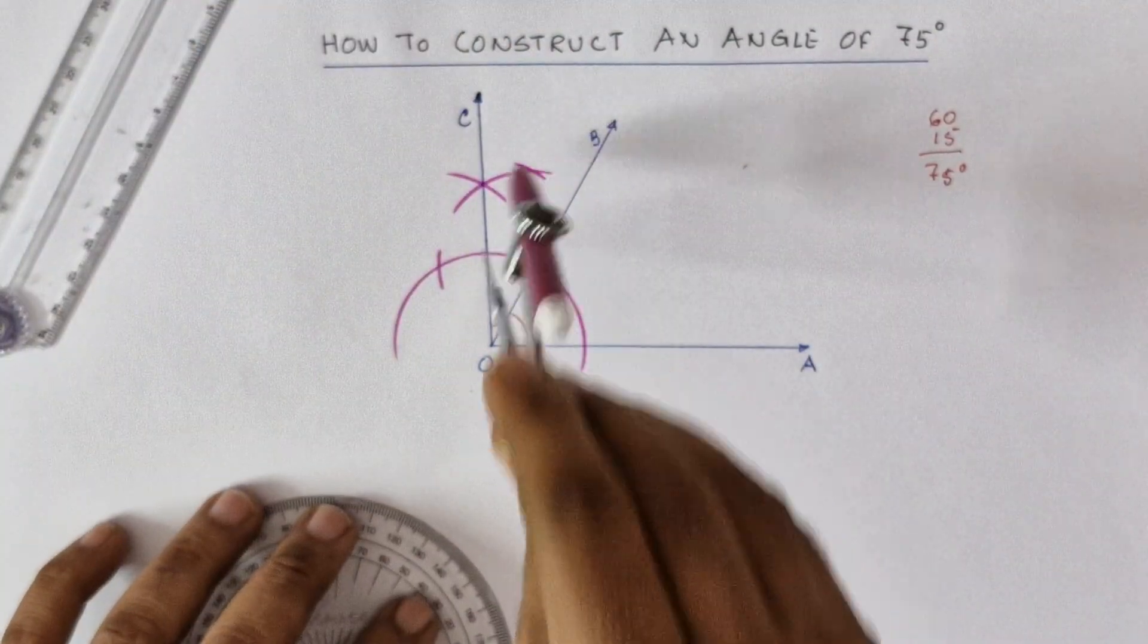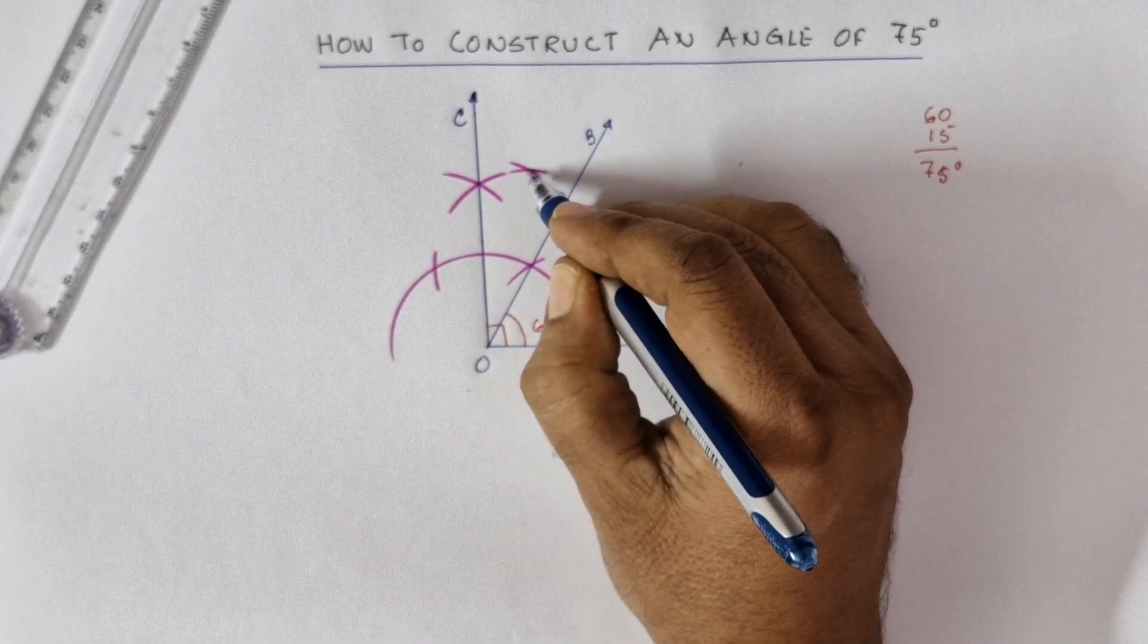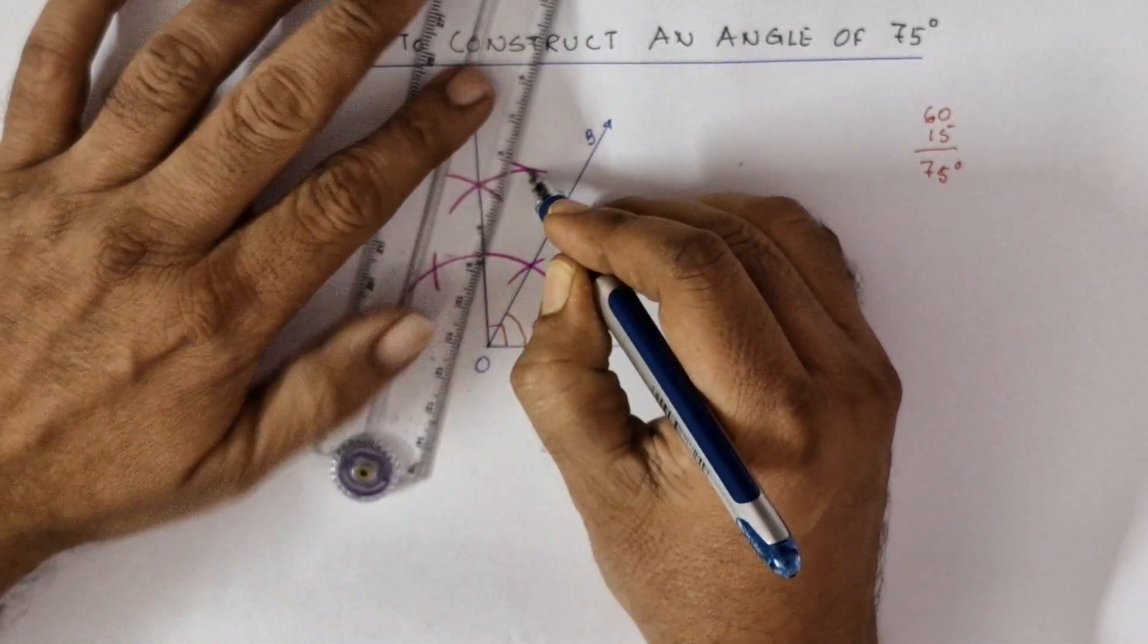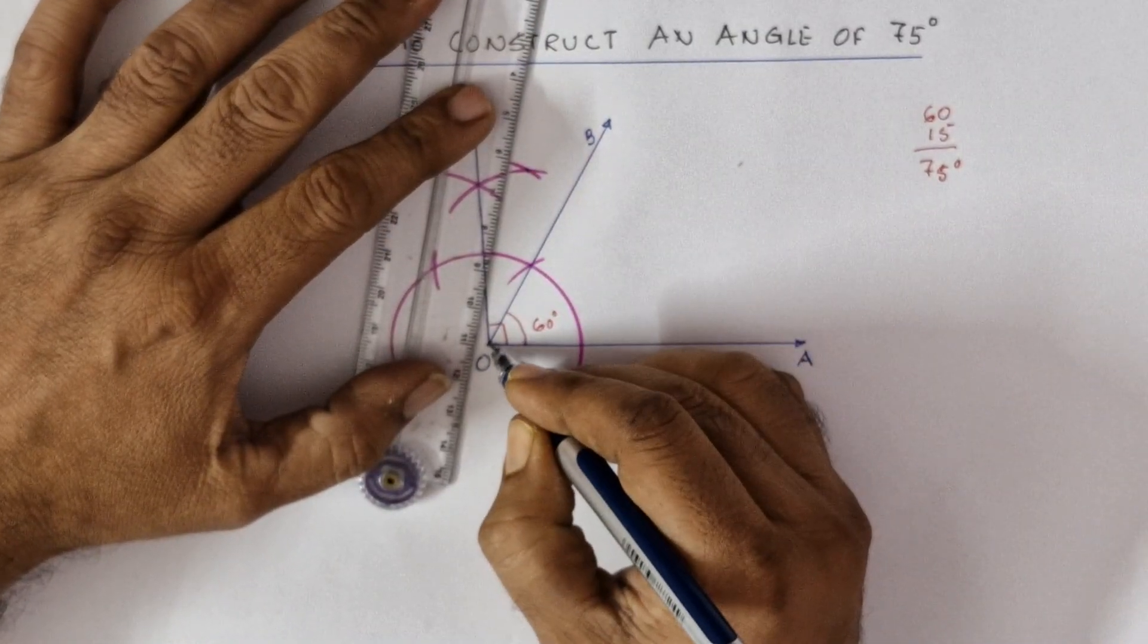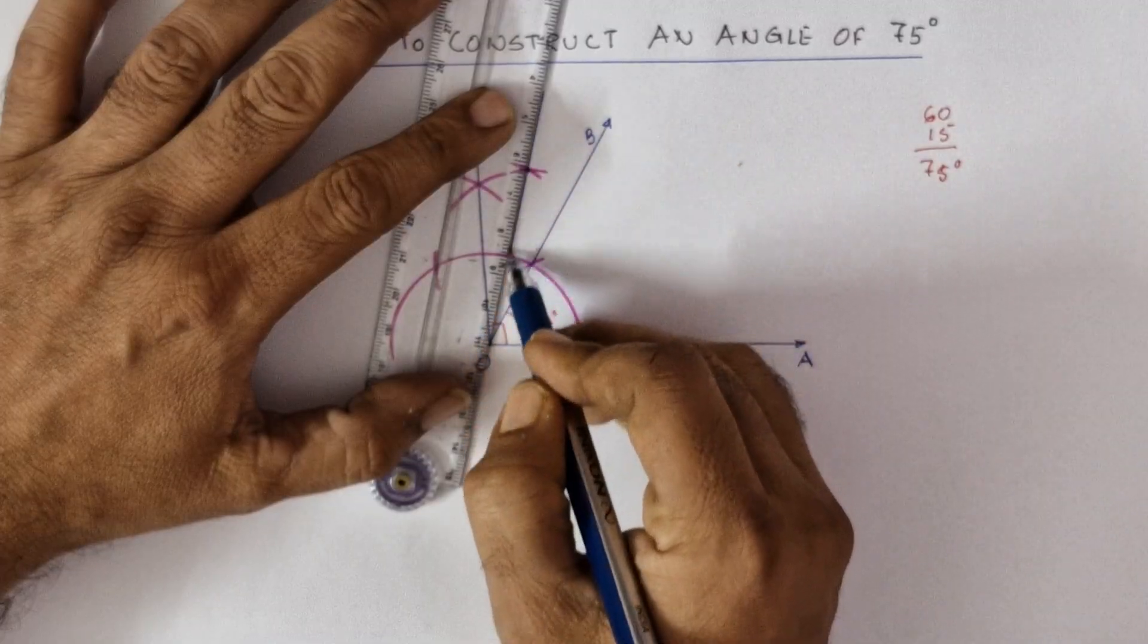This is the intersection point. Mark the intersection point well. Point O and the intersection point - let's join it.